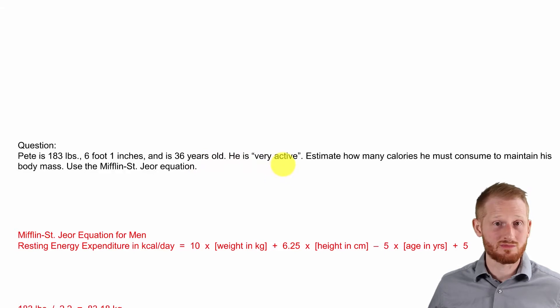And he reports being very active to you, based on you asking him about his physical activity level. So he wants you to estimate his caloric need in order to maintain his body mass. And you are going to use the Mifflin-St. Jeor equation to do this.